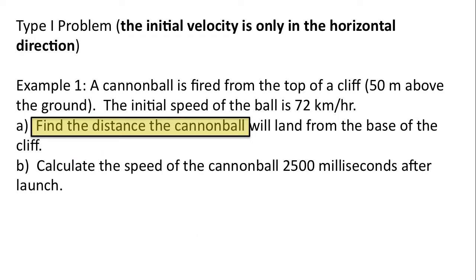Here's our first problem. A cannonball is fired from the top of a cliff. The initial speed of the ball is 72 kilometers an hour. Find the distance the cannonball will land from the base of the cliff, and calculate the speed of the cannonball 2500 milliseconds after launch.